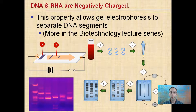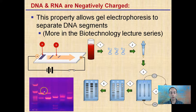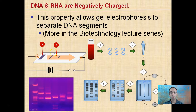A commonality between RNA and DNA is that they're both negatively charged. This allows gel electrophoresis to separate DNA segments — we'll cover more in the biotechnology lecture series. Basically, if we apply a positive charge, DNA and RNA, being negatively charged, will be drawn toward it, which allows us to separate out fragments of these nucleic acids. Just realize that the negative charge from their backbone allows separation through electrophoresis, involving a difference in charge and voltage.